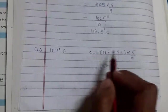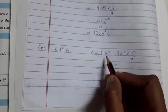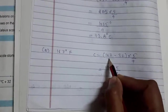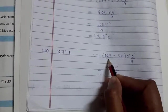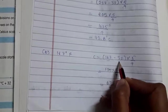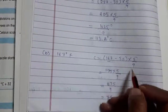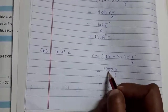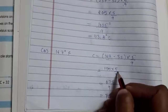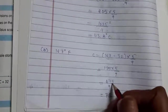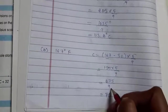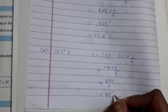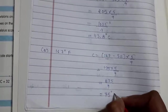Next: 167 degrees Fahrenheit. Using the formula C = (F − 32) × 5/9, replace F with 167: 167 − 32 = 135. Multiply by 5 to get 675, then divide by 9 to get 75 degrees Celsius.